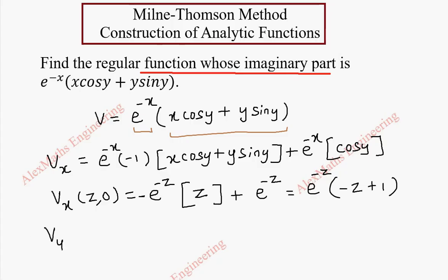Now we are going to find vy. Here the first term is fully constant so we keep it as it is. And x cos y, x is a constant so it stays as it is and cos y is minus sin y. And here we use a product rule y into sin y. So y we keep as it is, derivative of sin y is cos y plus sin y, and derivative of y is 1.